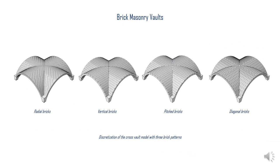Now that we have a validated procedure, it can be applied to full-scale brick masonry vaults to investigate the effects of the brick pattern on the static behavior of cross vaults. Cross vaults have been analyzed with four different patterns: radial, vertical, pitched, and diagonal.